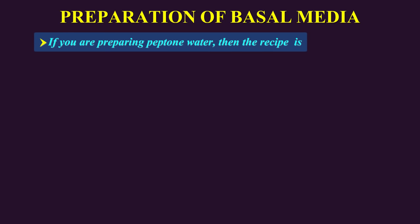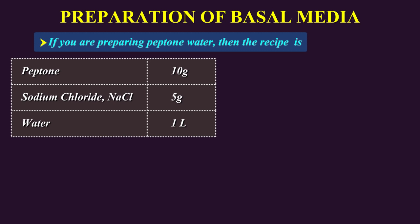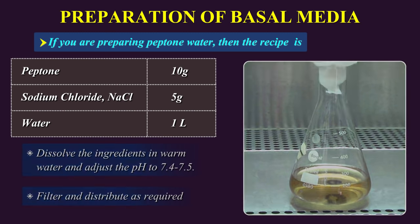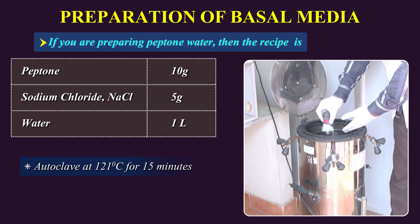Alternatively, if you are preparing your own peptone water, the recipe is: peptone 10 grams, sodium chloride 5 grams, and water 1 litre. Dissolve the ingredients in warm water and adjust the pH to 7.4–7.5. Filter and distribute as required. Autoclave at 121°C for 15 minutes.